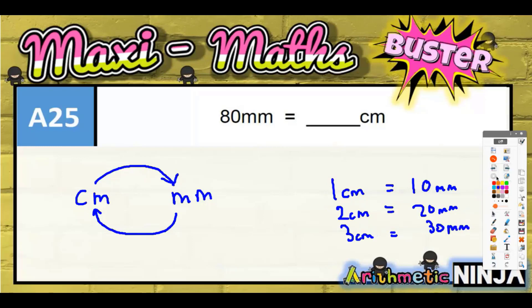Now if you think about this, what is this telling you? Well, it's telling you that the number of centimeters times 10 gives you the number of millimeters. One times 10 is 10, two times 10 is 20, three times 10 is 30.